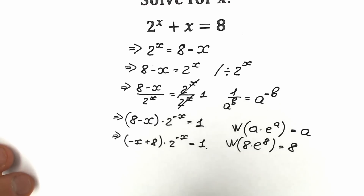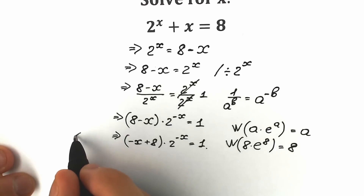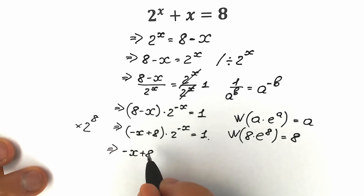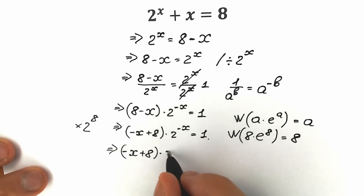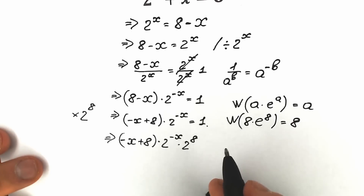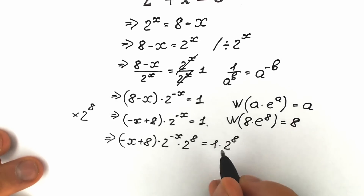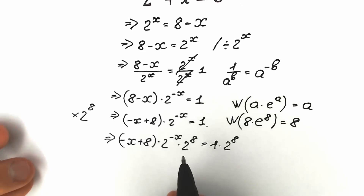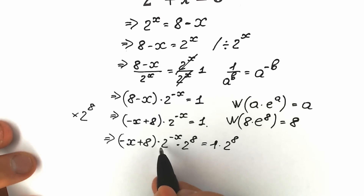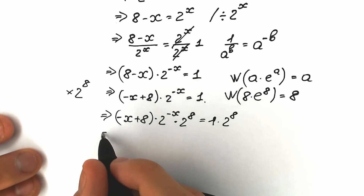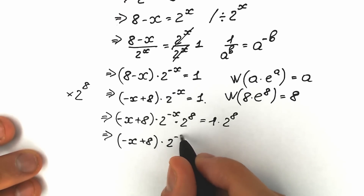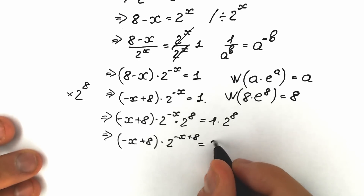Right now let's try to create an expression to which we can apply the Lambert W function. I suggest multiplying both sides by 2 to the power 8. So we have minus x plus 8, times 2 to the power minus x, times 2 to the power 8, equal to 1 times 2 to the power 8. Since we have the same base 2 with different powers being multiplied, by the power rule we combine them: 2 to the power (minus x plus 8). So we get minus x plus 8, times 2 to the power (minus x plus 8), equal to 2 to the power 8.